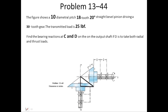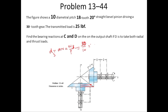Since the force is exerted at a specific point, we need to find the average radius of gear 3. The diameter formula is d = N/P, where P is the diametral pitch. So d2 = N2/P = 18/10 = 1.8 inches, giving r2 = 0.9 inches. And d3 = N3/P = 30/10 = 3 inches, giving r3 = 1.5 inches.